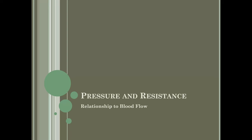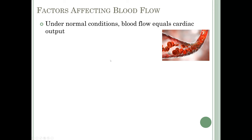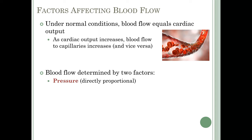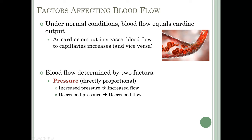Now we'll look at pressure, resistance, and their relationship to blood flow. Under normal conditions, blood flow equals cardiac output. As cardiac output increases, blood flow to capillaries increases, and vice versa. There are two primary factors affecting blood flow. First is pressure — pressure and blood flow are directly proportional, meaning as pressure increases, blood flow increases, and as pressure decreases, blood flow decreases. Think about how higher water pressure means more water coming out of your shower.